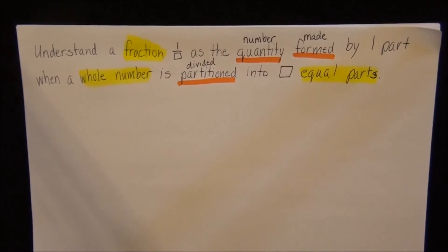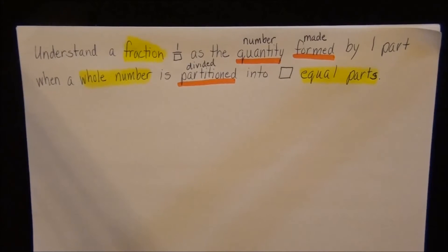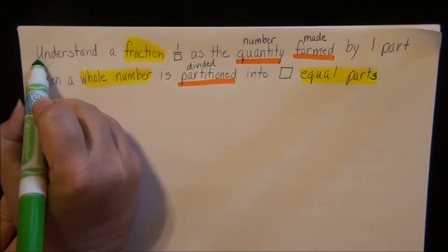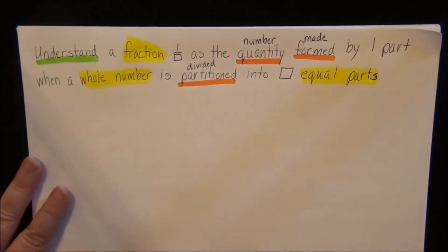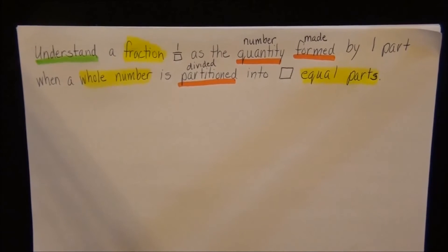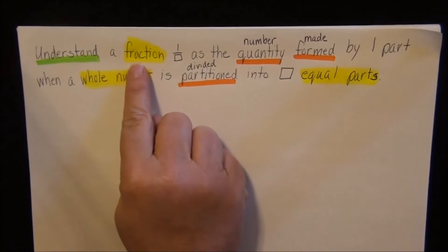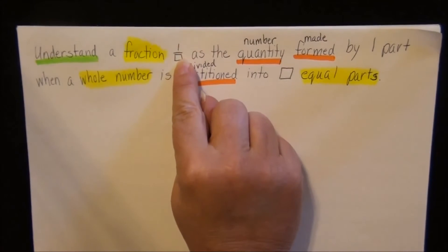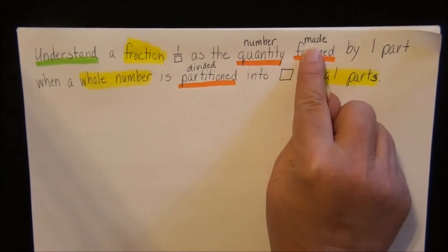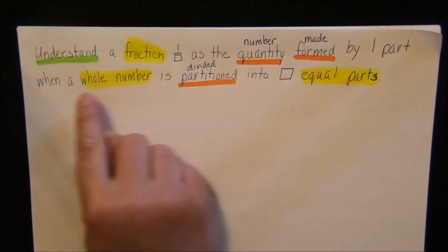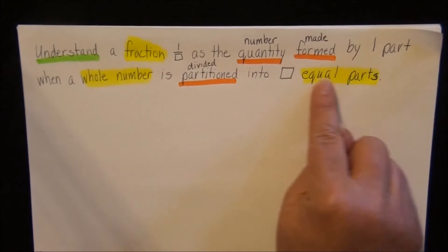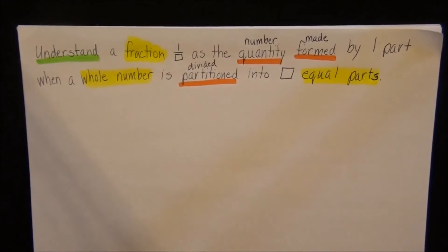The other thing I need to point out to you is the action word, the verb in the objective, what it is you have to do. Here the action word is understand. Now just understanding, that's not something you can show me, so you will actually have to demonstrate your understanding for me in class. But for right now, you're just going to understand that a fraction 1/blank as the number made by one part when a whole number is divided into equal parts. That's basically all that objective means.